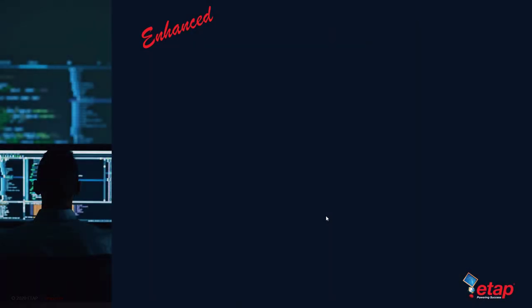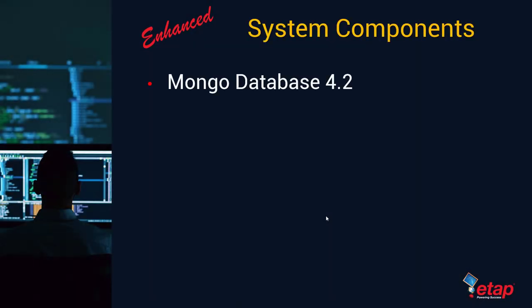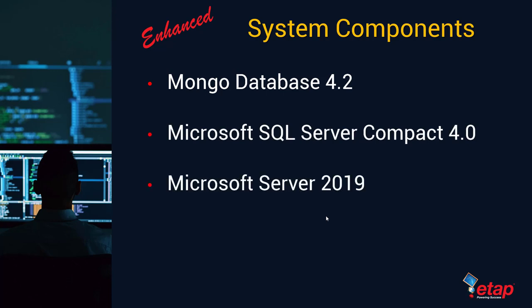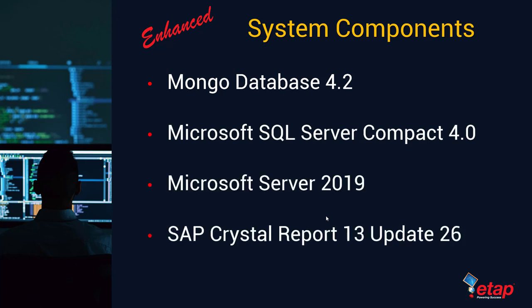The system components enhanced in ETAP20 include an upgraded MongoDB going up to 4.2, updated Microsoft SQL Server Compact up to version 4.0, compatibility with Microsoft Server Operating System 2019, and an updated SAP Crystal Report version 13 update 26 that brings ETAP up to date with all the latest industry components. Be sure to review the system requirements for ETAP20.